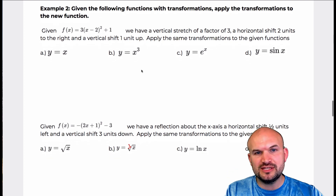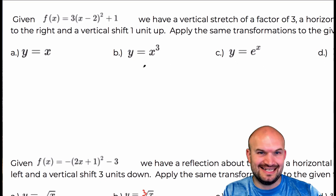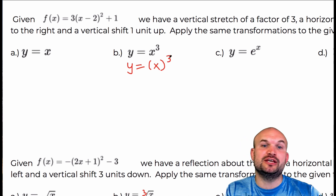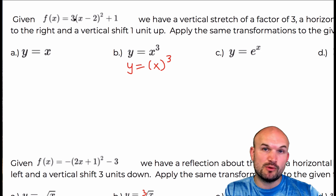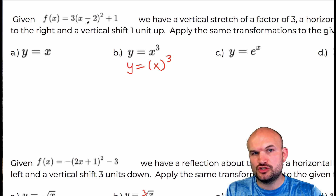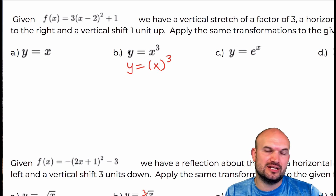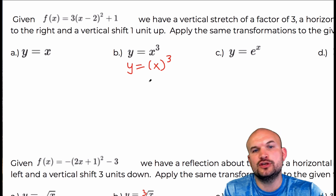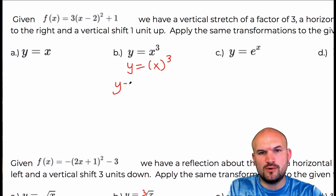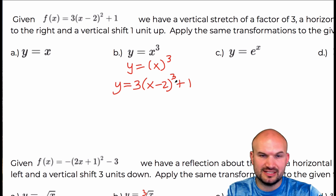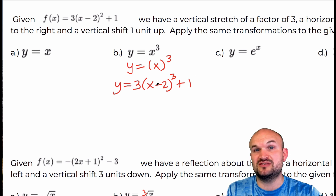When doing these problems, I like to understand what is inside the function, and we can rewrite each function with parentheses. For the cubic function, inside the function is what's going to be cubed. We have a vertical stretch — multiplying by three outside — a horizontal shift subtracting two inside, and a vertical shift adding one outside. So we write: y equals three times (x minus two) cubed plus one. The transformations are the same; it's just the function that changed.